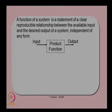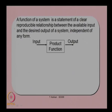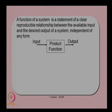What is the function of a system? A function is basically a relationship between the input and output of a system — a statement of a clear reproducible relationship between the available inputs and the desired output of a system, independent of any form. We do not discuss about the form, shape, or hardware through which we can obtain the function; we basically define the relationship between input and output — what functions are needed within the system to convert the input to an output.